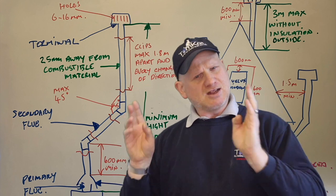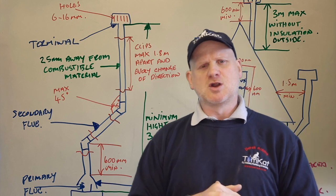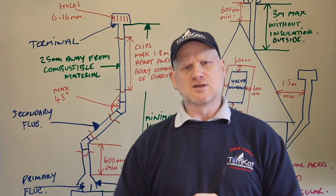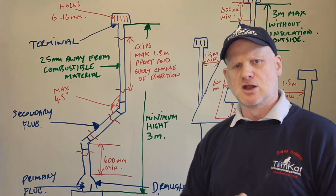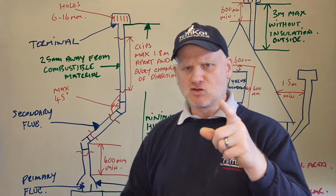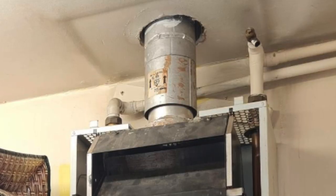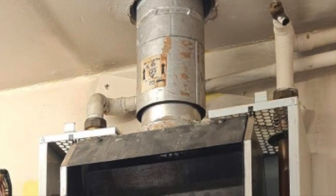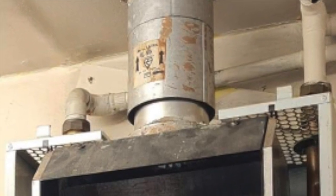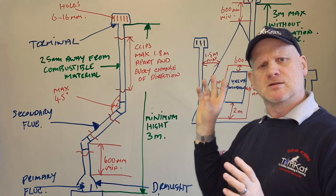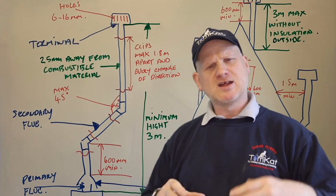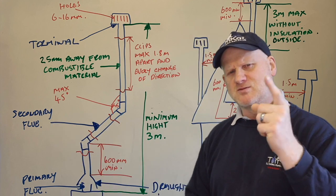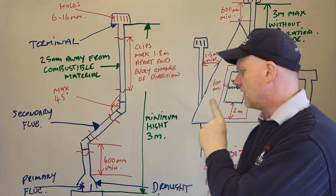The secondary flue must be twin wall. We can't have flue liner connecting to an open flued boiler unless it's a back boiler in a builder's opening. In the loft, it can't be flue liner — it has to be twin wall. We also can't use single wall flue systems in the loft. When connecting to the appliance, you must use an appliance adapter, sealing only the inner flue system to the appliance, not the outer. You must follow the arrows on the flue system. The maximum clipping distance is every change of direction and no more than 1.8 metres apart.